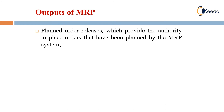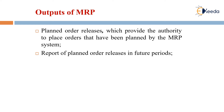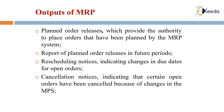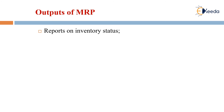Planned order releases provide the authority to place orders that have been planned by the MRP system. The report of planned order releases covers future periods. Reschedule notices indicate changes in due dates for open orders. Cancellation notices indicate that certain open orders have been cancelled due to changes in the MPS system. Reports on inventory status are also included.